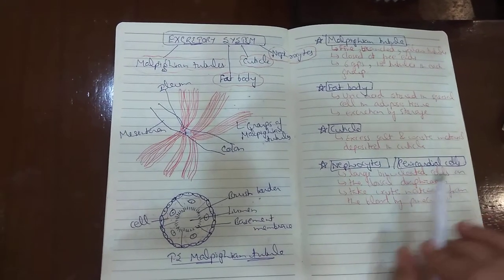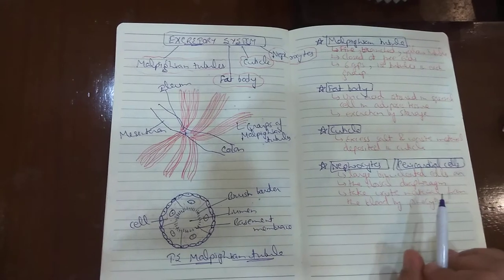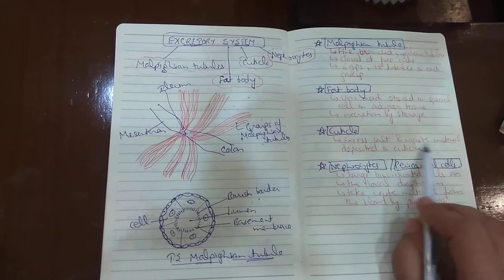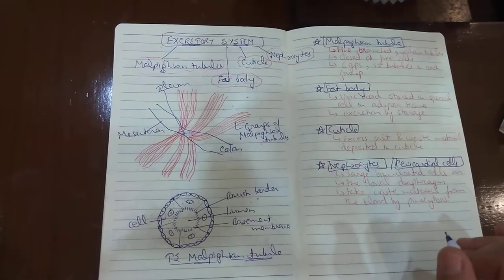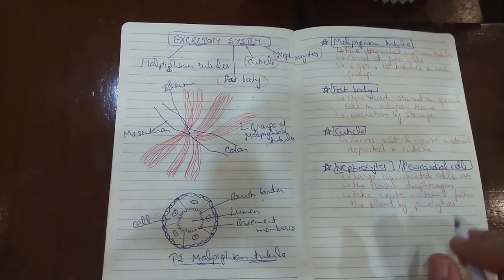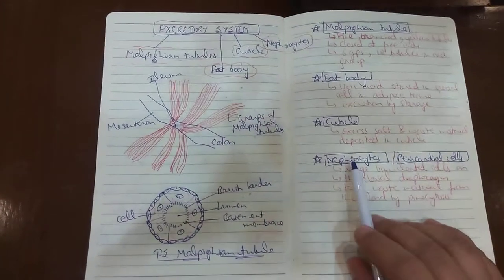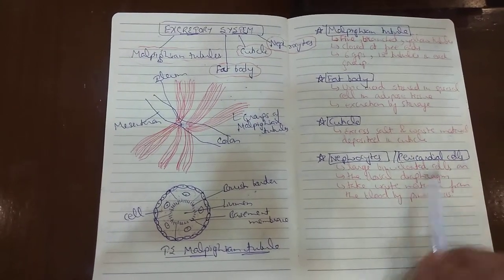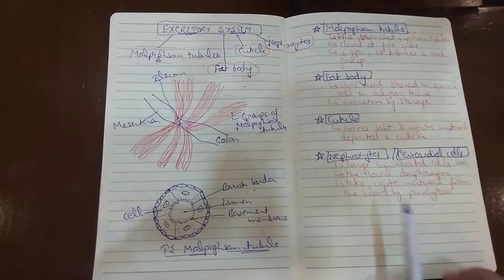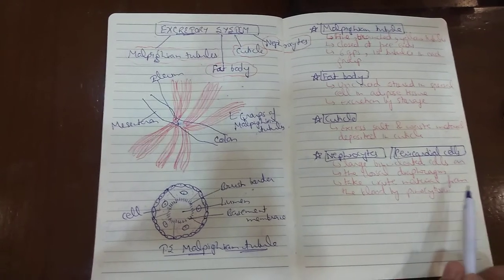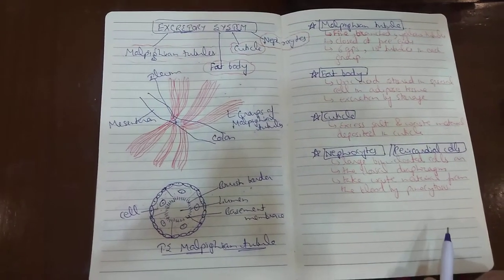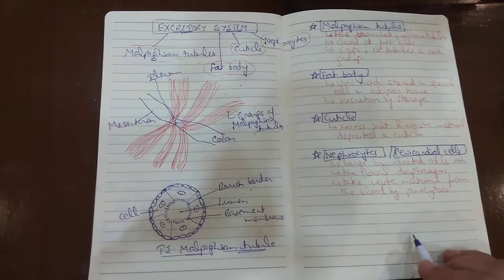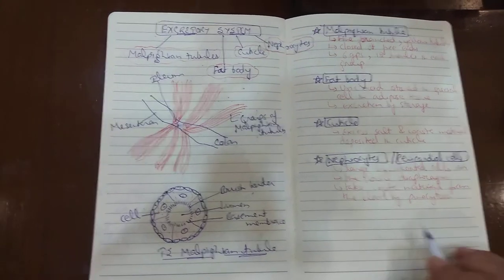Then the cuticle. Cuticle is basically the outermost layer, which is removed with each molting. Excess salts and waste material get deposited in the cuticle and, as a result of molting, they are also expelled out of the body. Lastly, there are the nephrocytes and pericardial cells. They are large binucleated cells present on the dorsal diaphragm. They take waste material from the blood by pinocytosis and store it in their cytoplasm.